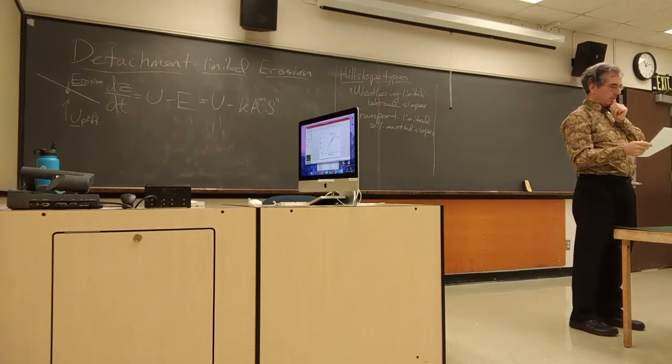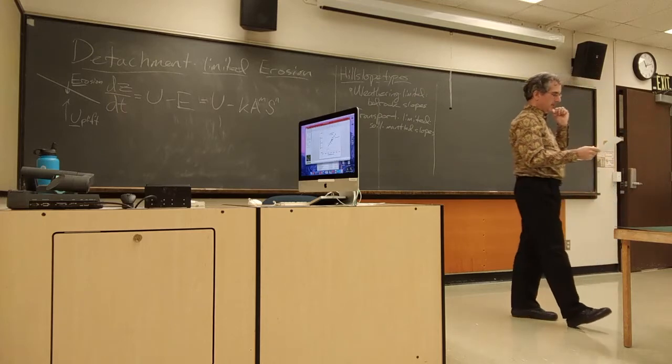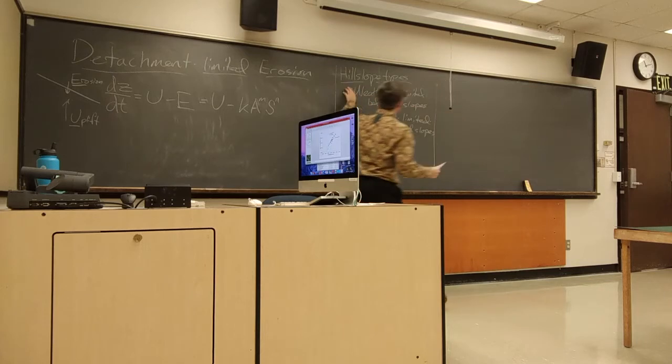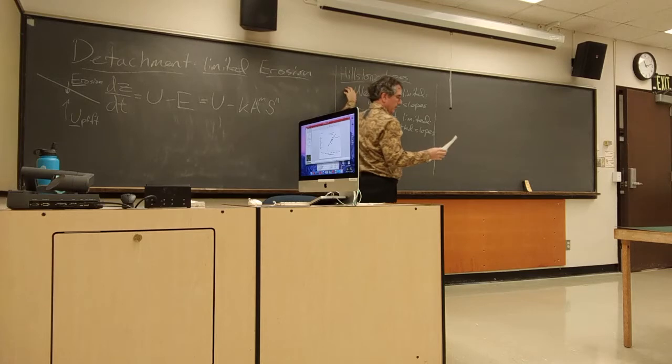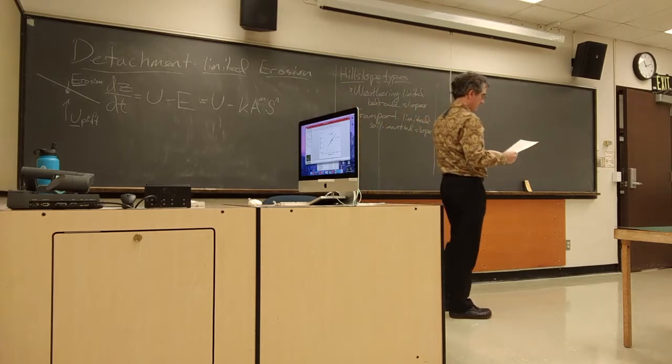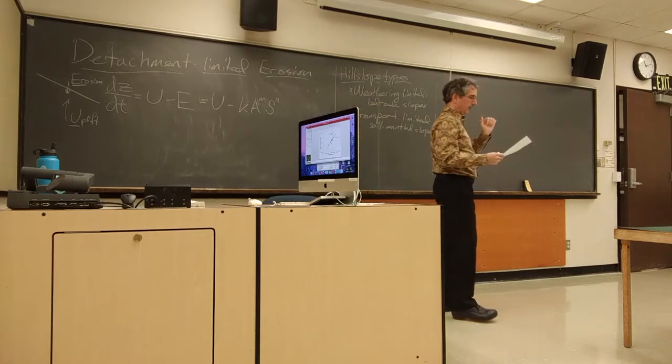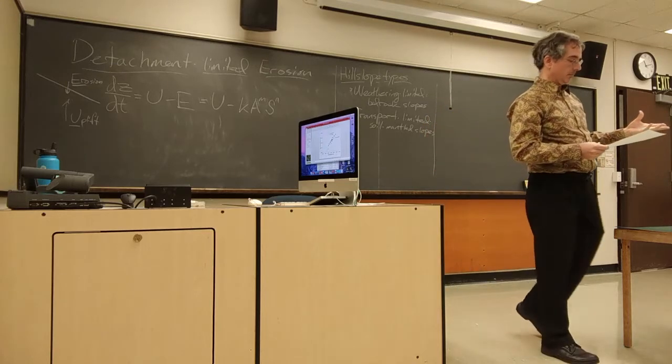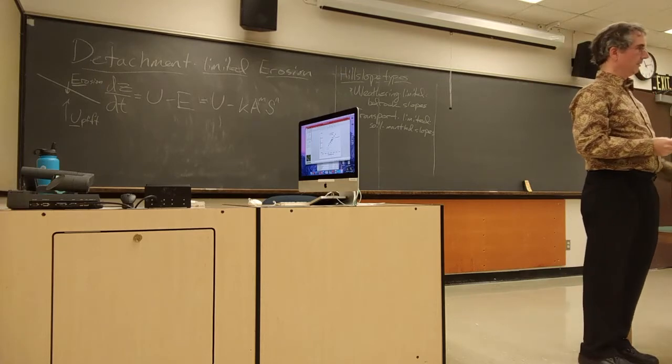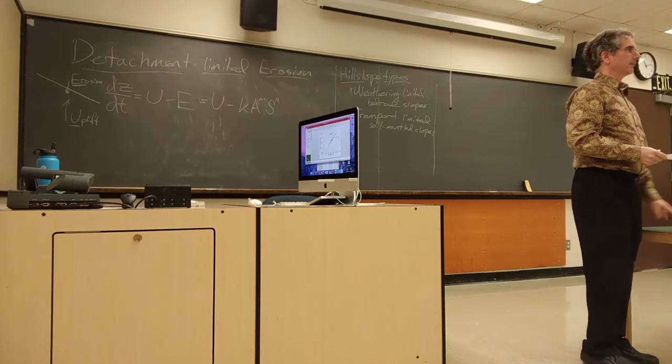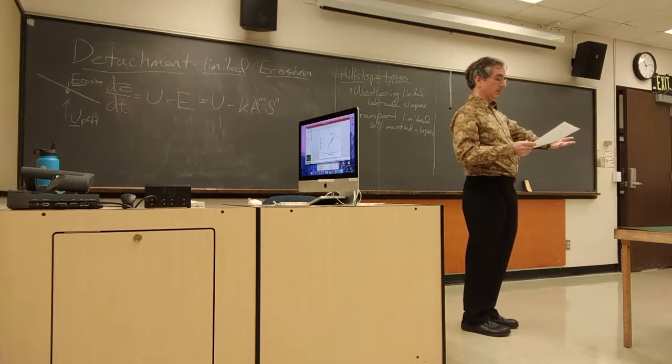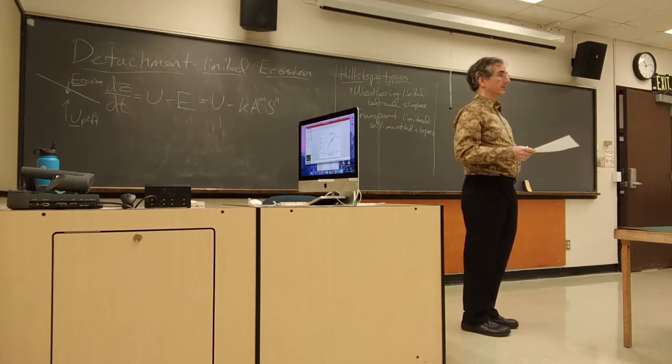So, in the case of streams, the detachment-limited case here is analogous to this weathering-limited case on hill slopes. And now if in our mass balance for a stream bed, we can't just assume that transport capacity is ample, however much stuff we need to remove, then we move toward the other end member, which like the hill slope, we call transport limited.